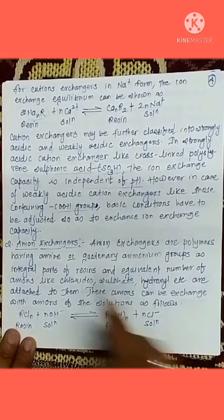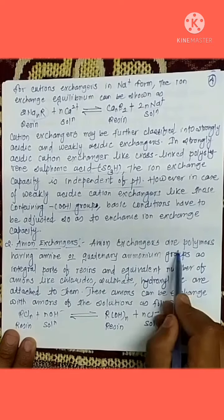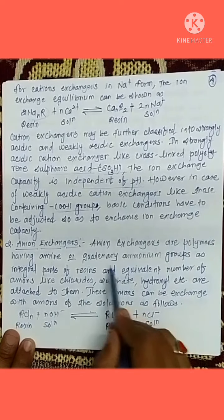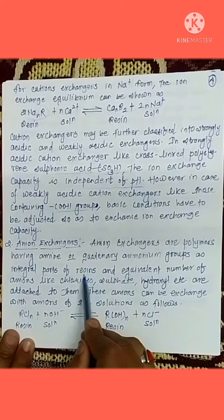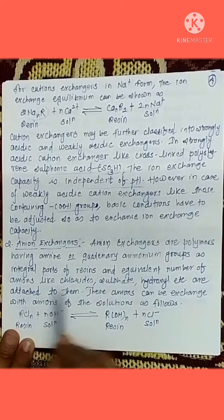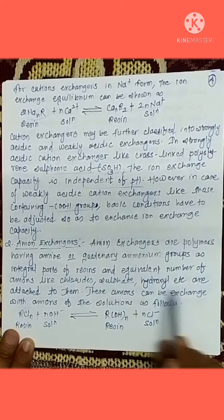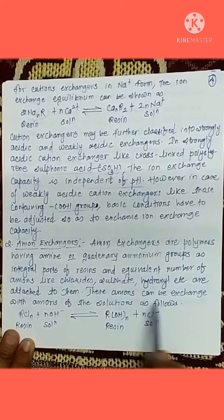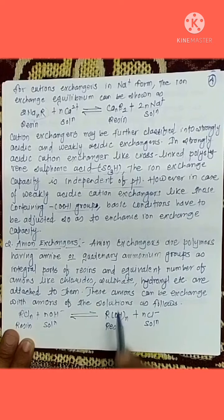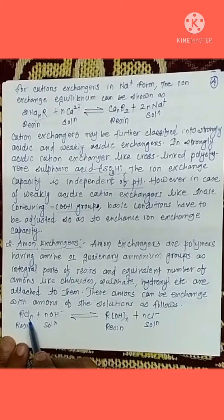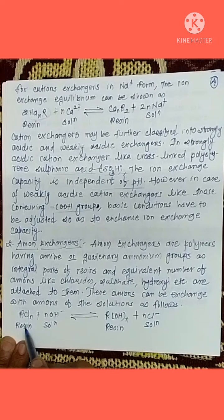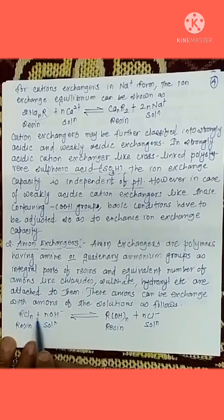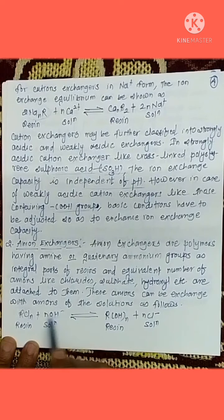The second type of exchanger is the anion exchanger. Anion exchangers are polymers having amine or quaternary ammonium groups as an integral part of the resin. An equivalent number of anions like fluoride, sulfate, hydroxyl, etc. are attached to them. These anions can be exchanged with anions in the solution. For example, this anion exchanger resin contains chlorine, which has a negative charge. When it comes in contact with the solution, the hydroxyl group gets attached to the resin and the chlorine ion comes into the solution.